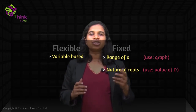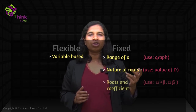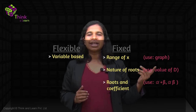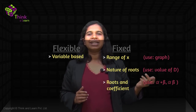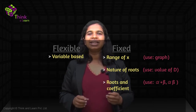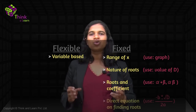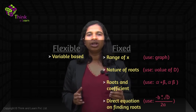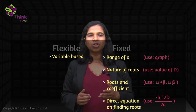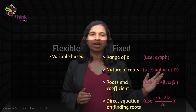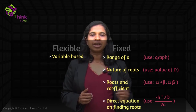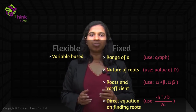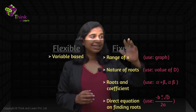The third type is based on relations between roots and coefficients — there you use alpha plus beta and alpha times beta. And finally, there are direct questions where a quadratic equation is given to you and you are asked to find the roots — use the quadratic formula: minus b plus or minus root d, divided by 2a.